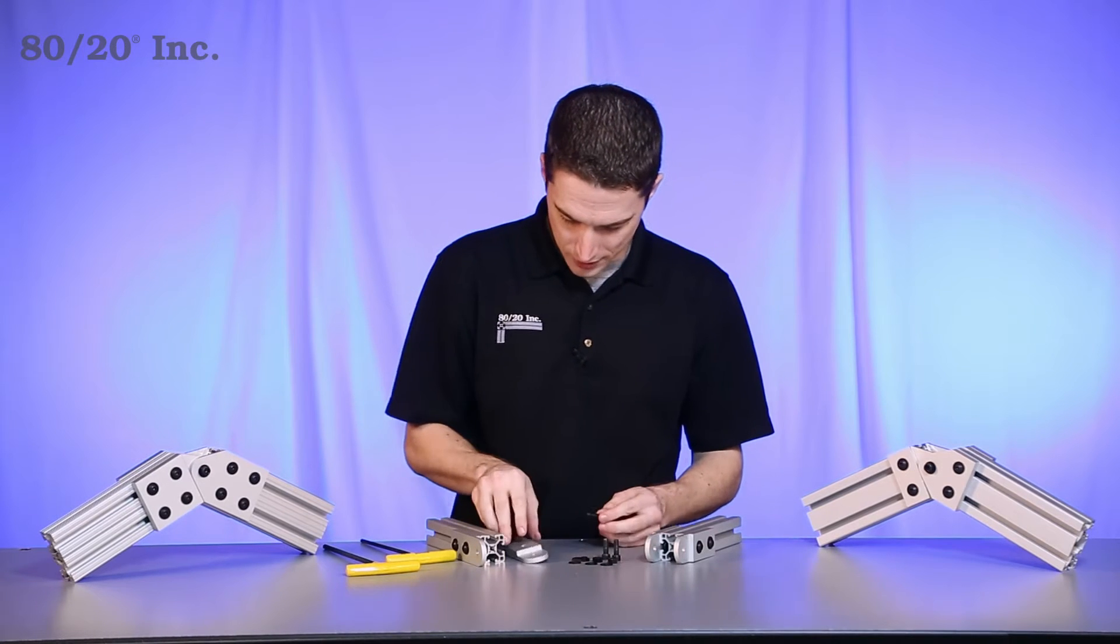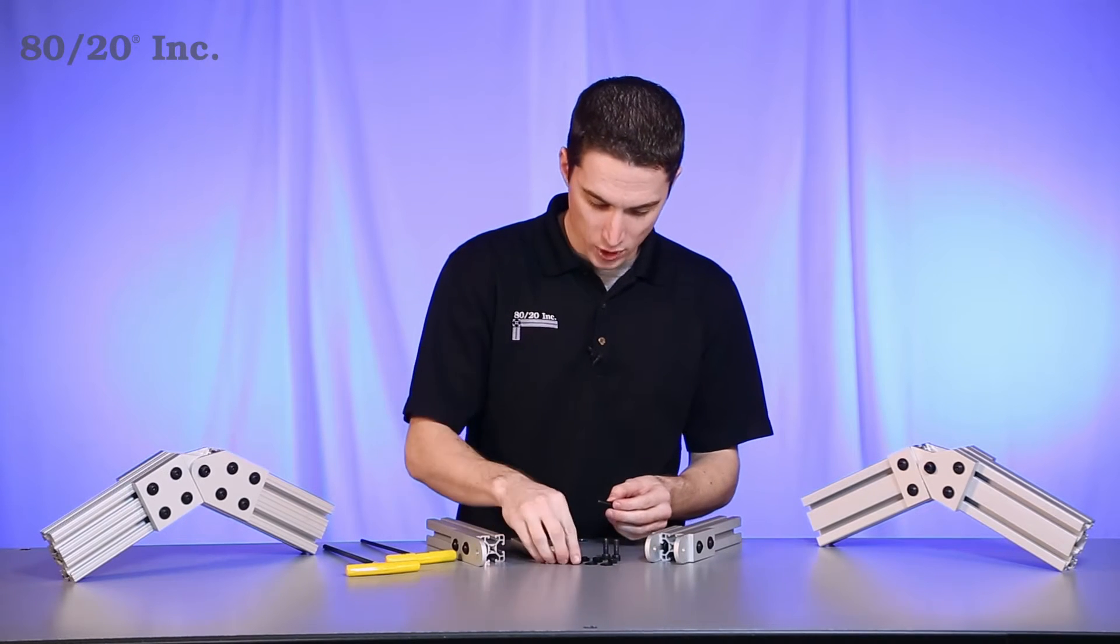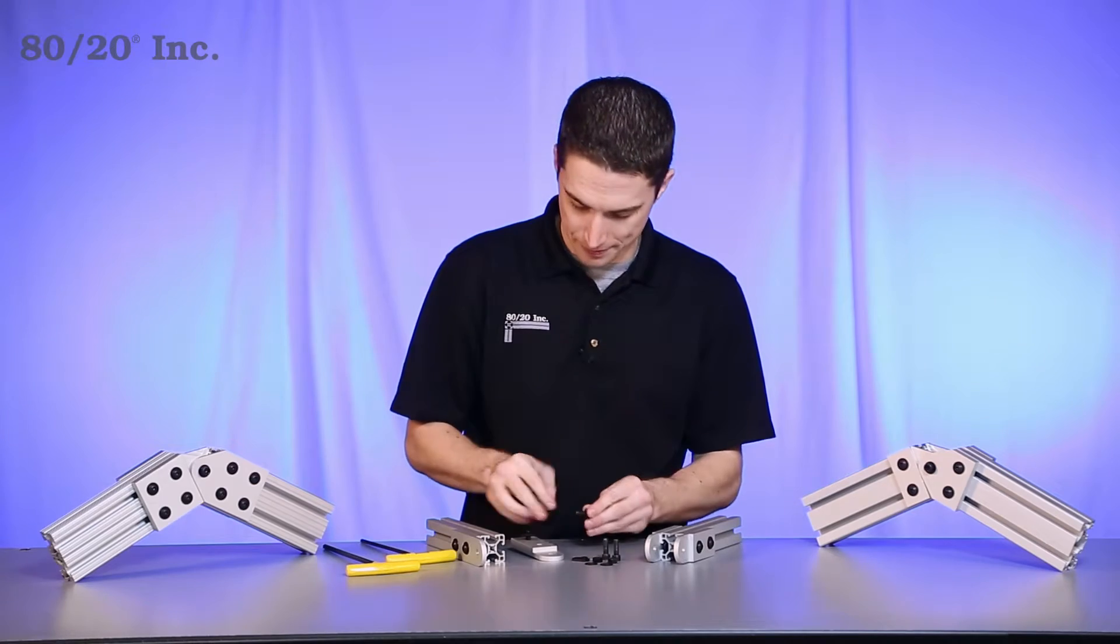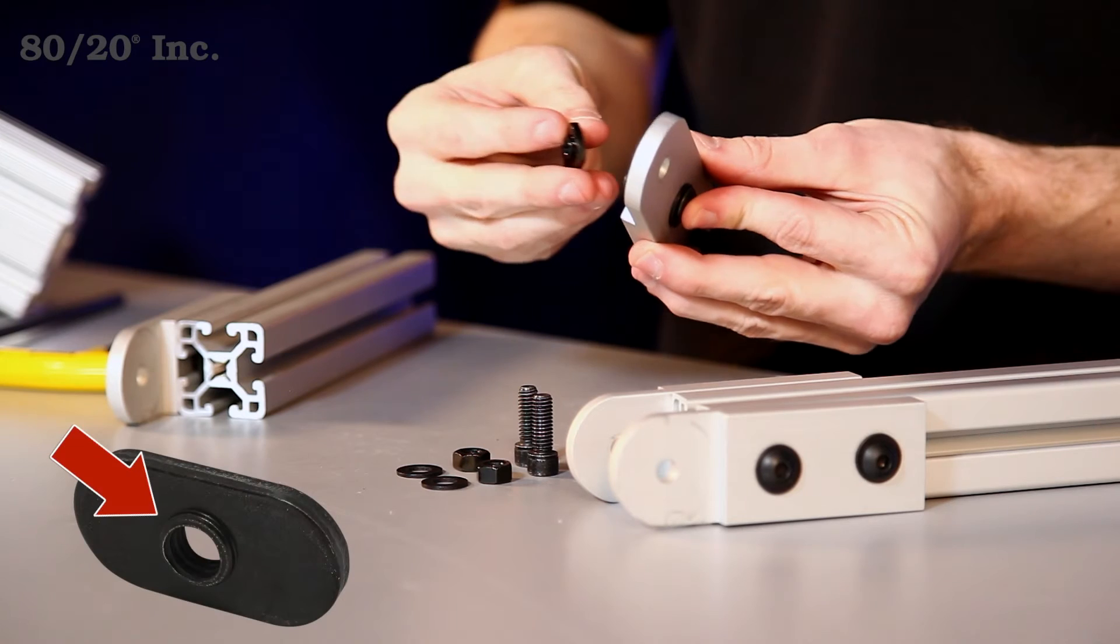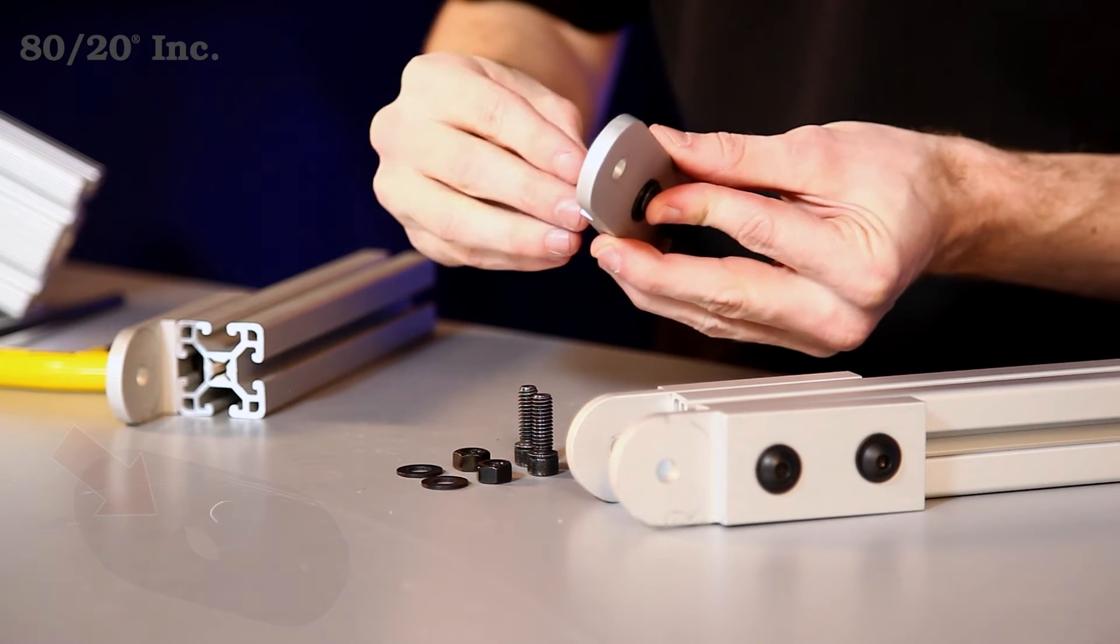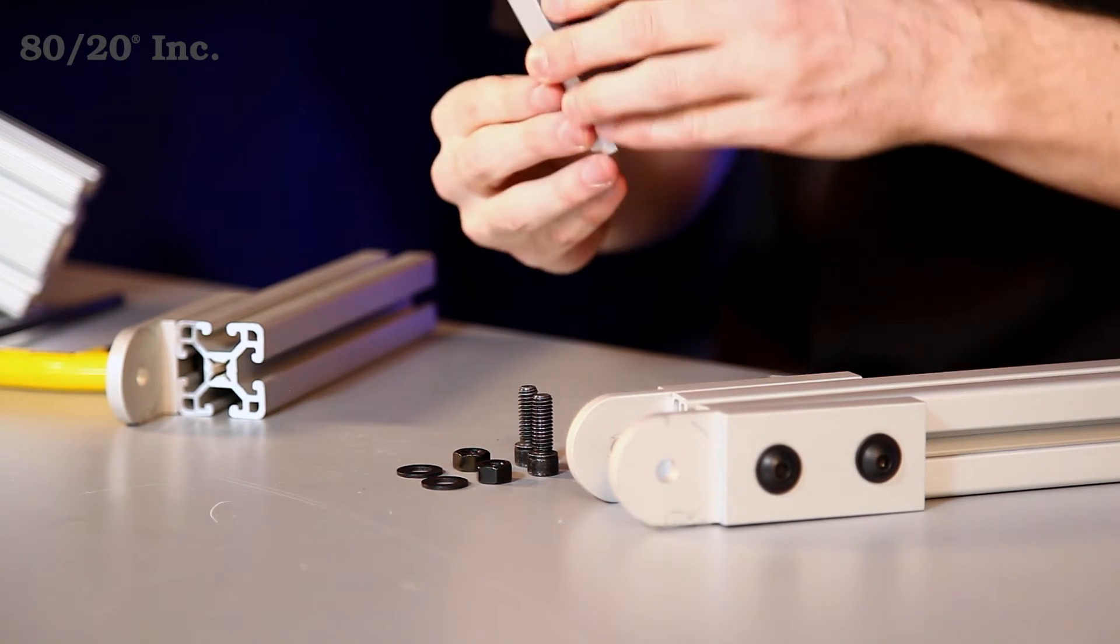Now to finish up, I'm going to put one last bolt and one last T-nut into this plate. Now it's important when you're using your T-nuts to have the pilot projection facing downwards or away from the plate. Get that preloaded on there.